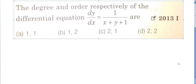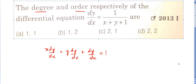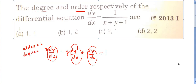Next question: find the degree and order respectively of the differential equation. Note — degree is asked first, then order. The highest derivative term is dy/dx, so the order is 1. The highest power of that term is also 1, so the degree is 1. Therefore degree is 1 and order is 1.